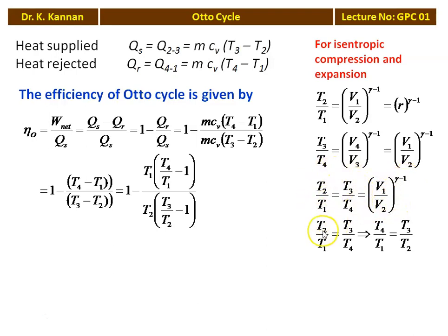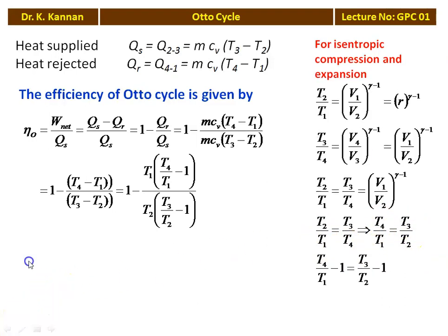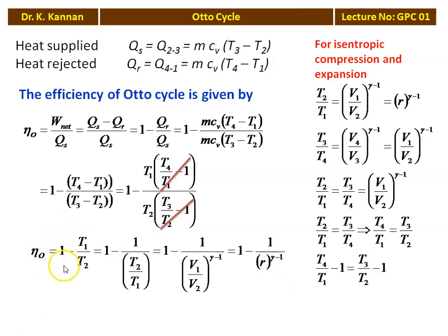Finally, the Otto cycle efficiency: η = 1 − T1/T2 = 1 − 1/(T2/T1) = 1 − 1/(V1/V2)^(γ−1) = 1 − 1/R^(γ−1). The Otto cycle efficiency depends on R (the compression ratio, V1/V2) and γ (the adiabatic index, Cp/Cv).